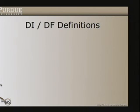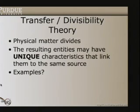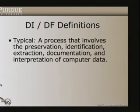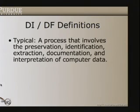The common definition you'll see in books and other literature is basically that it's a process that involves the preservation, identification, extraction, documentation, and interpretation of computer data. This is the classic definition of the field. We see that there's a process where we preserve the state of a computer we're investigating, identify pieces of evidence, extract them, document them, and interpret them. There's an implied process and some kind of taxonomy of what's involved.